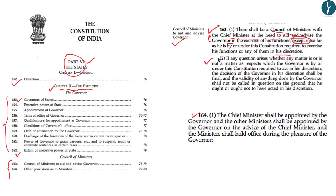Article 163 also specifies that if any question arises whether a matter is one in which the governor is required to act in his discretion, the decision of the governor shall be final and the validity of anything done by the governor shall not be called into question on the ground that he ought or ought not to have acted in his discretion. What scenarios allow the governor to act on discretion is totally left to be decided by the governor and cannot be challenged.